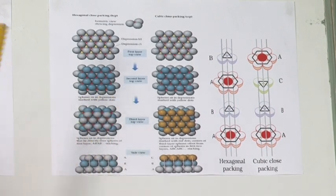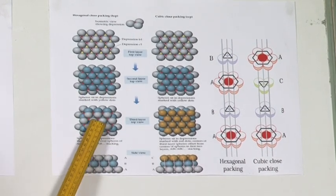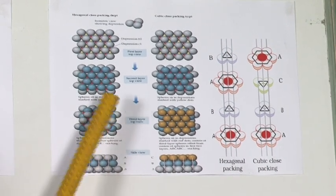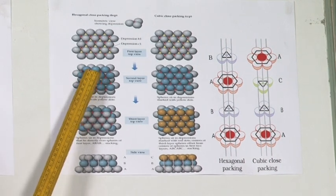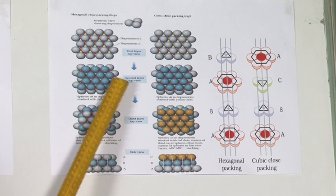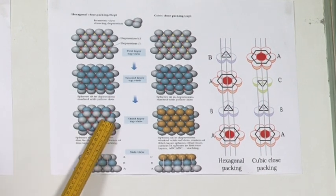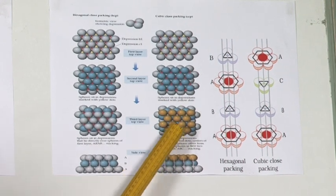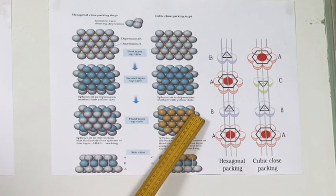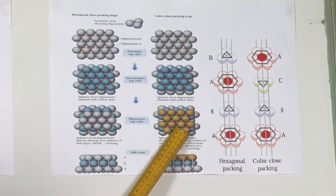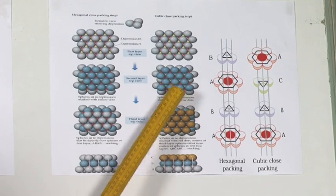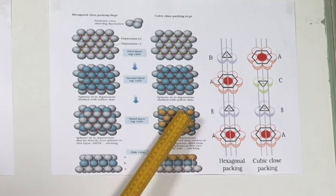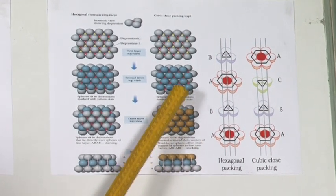When you keep the next layer, the third layer, the spheres are white in color. Those spheres are utilizing the voids created by the second layer, which are marked white. The red spheres are still visible. In the next figure, the third layer is made by yellow spheres kept at the voids marked red, so the red voids are now being covered.